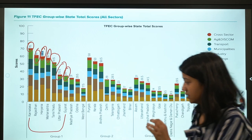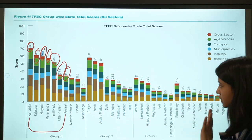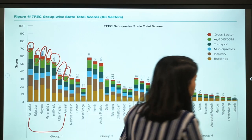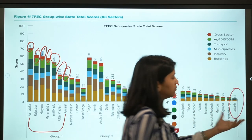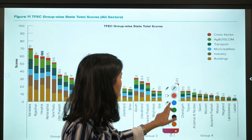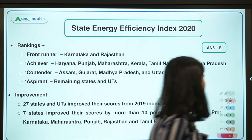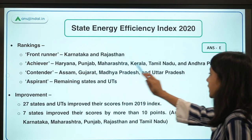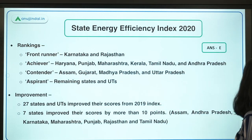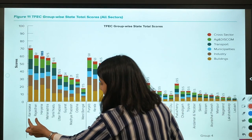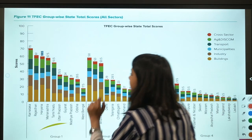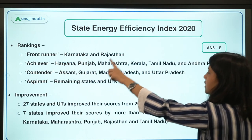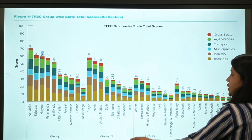These scores are important from an exam perspective. The state with the least score is the Union Territory of Ladakh. In the Front Runner category, Karnataka and Rajasthan are the top two states.